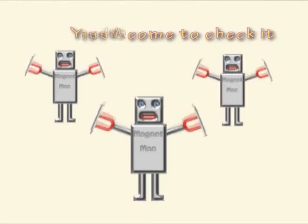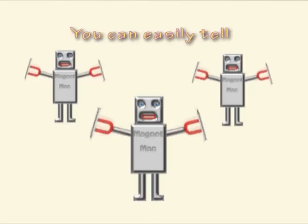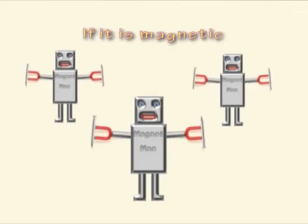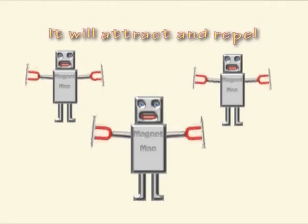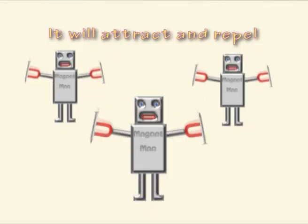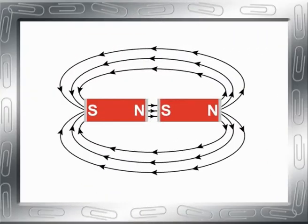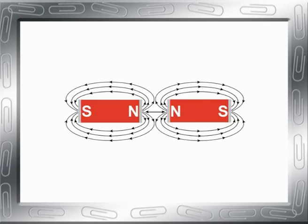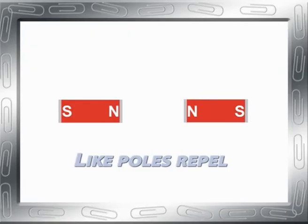When you come to check it, you can easily tell. If it is magnetic, it will attract and repel. Opposite ends of a magnet always pull together. But if they are similar, they push apart forever.